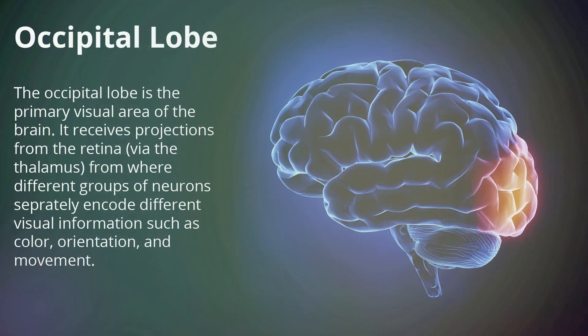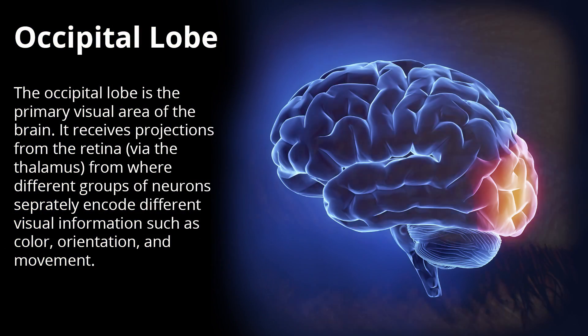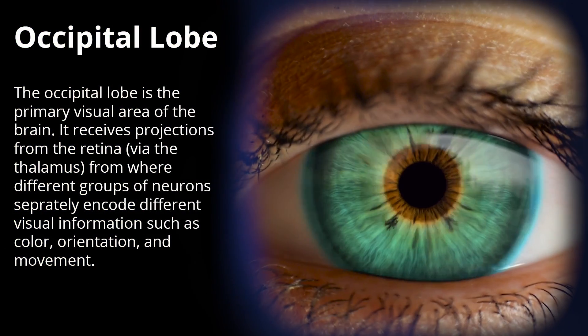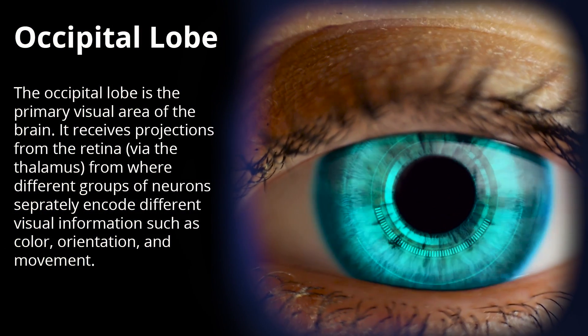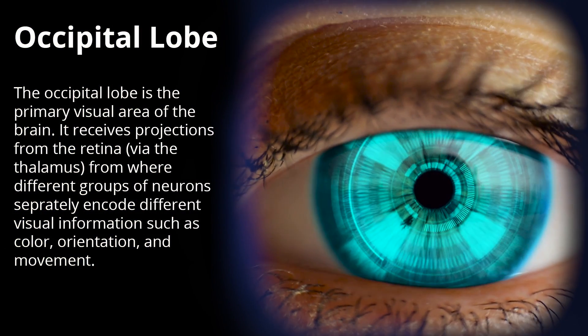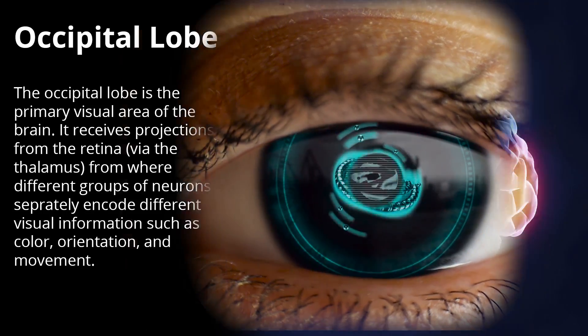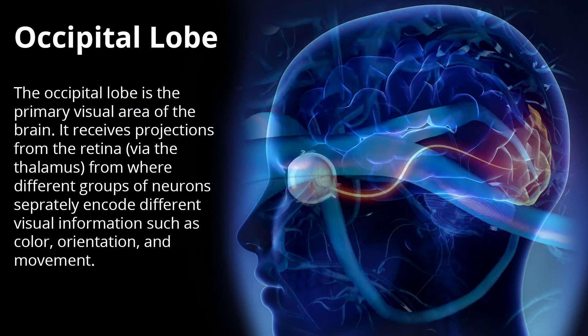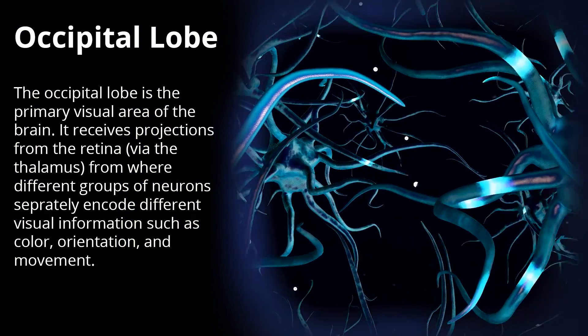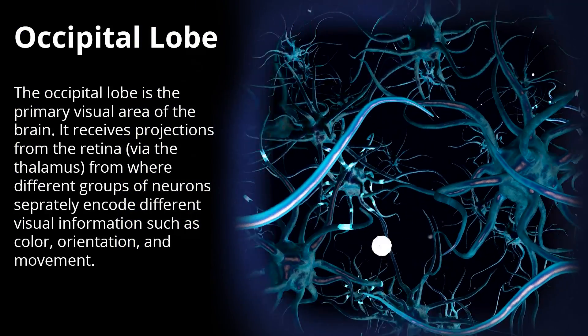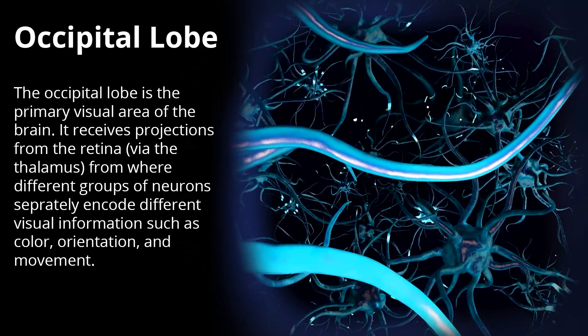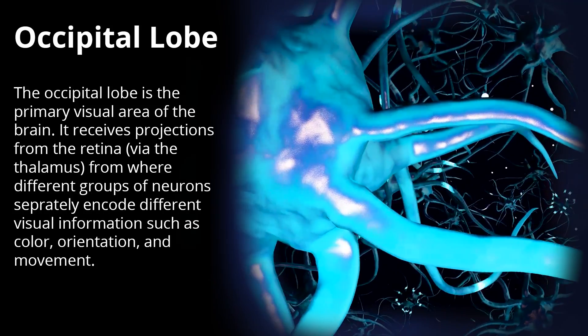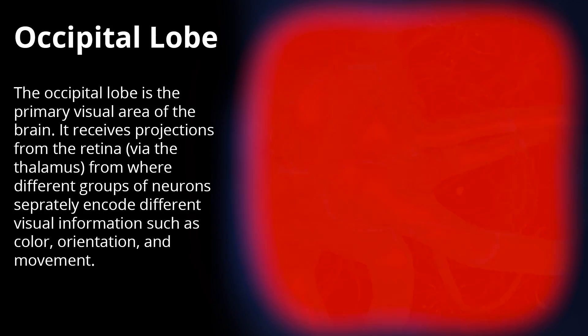Occipital Lobe. The occipital lobe is the primary visual area of the brain. It receives projections from the retina, via the thalamus, from where different groups of neurons separately encode different visual information, such as color, orientation, and movement.